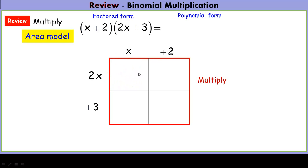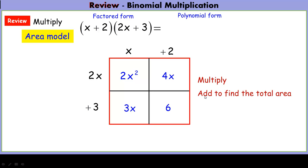Our first sub-rectangle gives us 2x squared. Then 2 times 2x is 4x, x times 3 is 3x, and 2 times 3 is 6. These are all the little sub-areas. We add them up to find the total area, which gives us a polynomial. We have monomials of different degrees, and we can only add like terms — we cannot add monomials of different degrees.